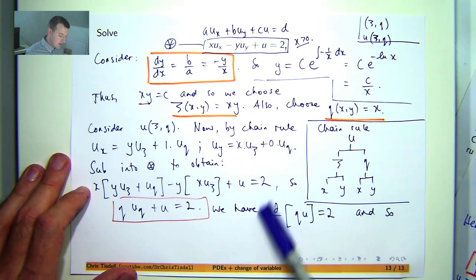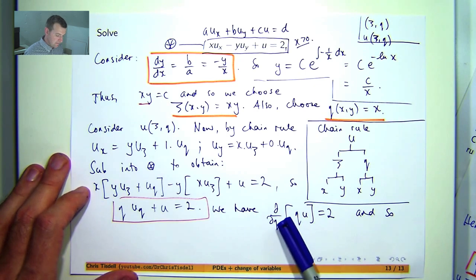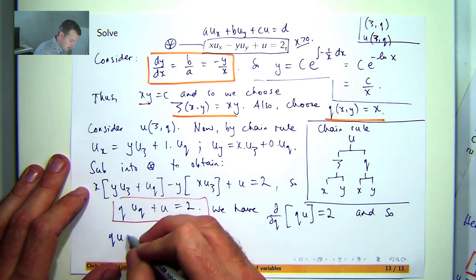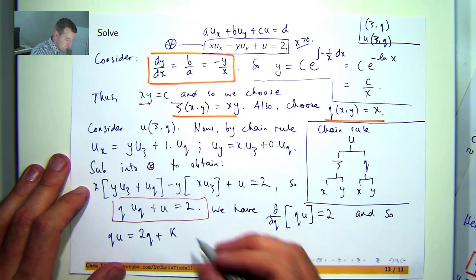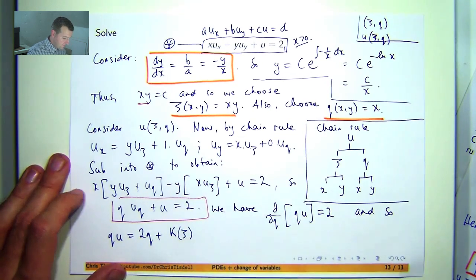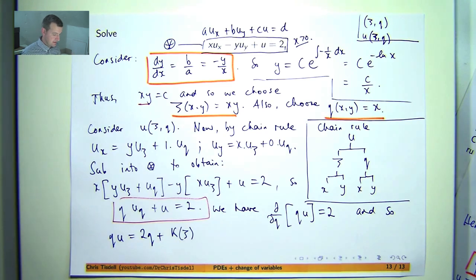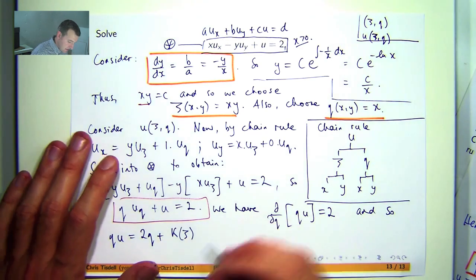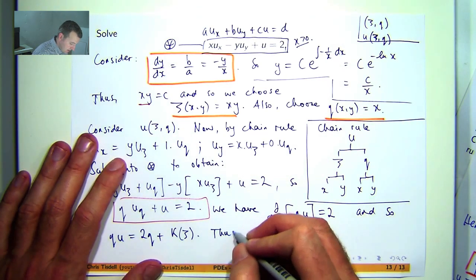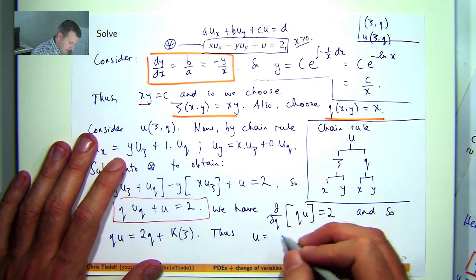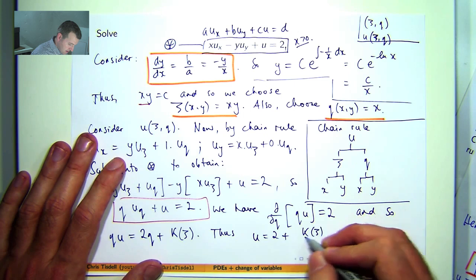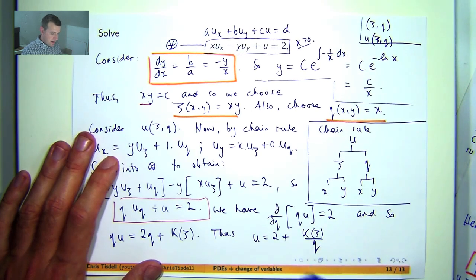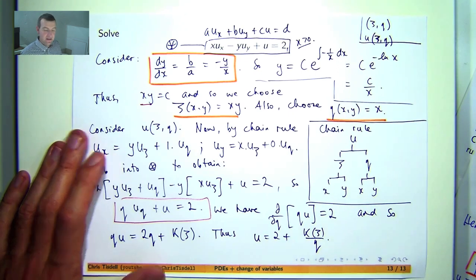So if I integrate both sides, the d/deta will disappear. And I'll get, because u is a function of two variables, I need a function of integration here. So I'm making u the subject. I'll get the following.